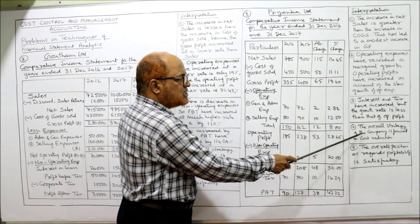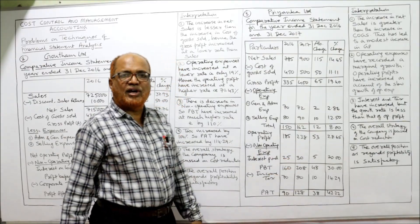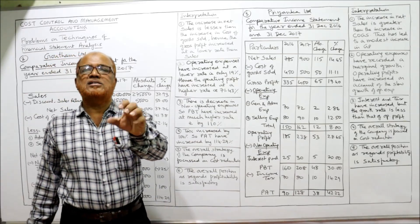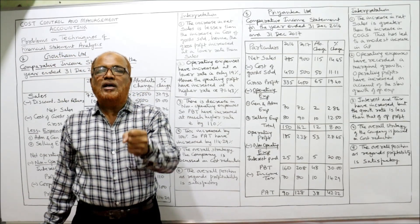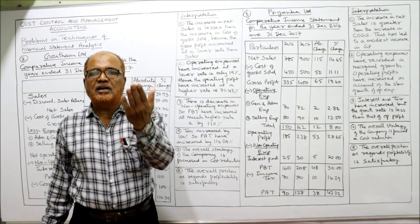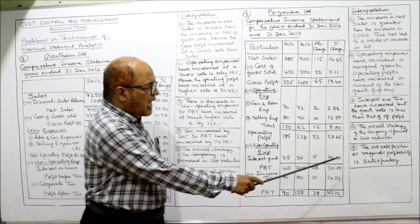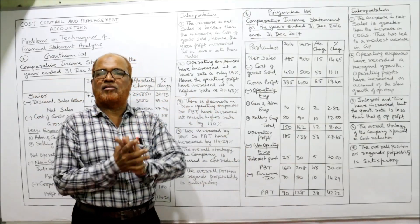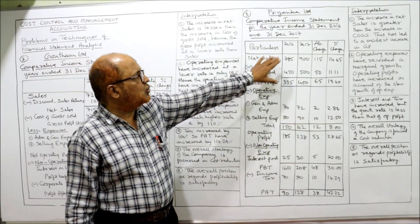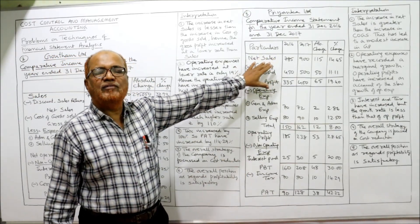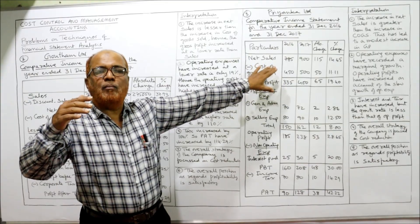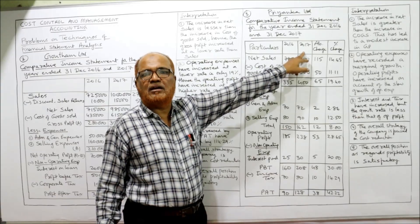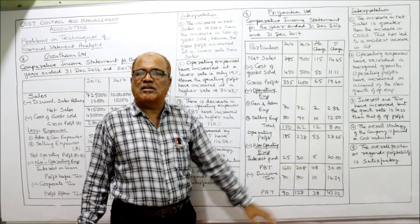The overall strategy of the company is focused on cost reduction. Comparing all the figures, it is clear the company is controlling its costs, which is why profitability is increasing. The overall position as regards profitability is satisfactory. Comparing these two years, there is a modest increase in the profitability of 2017 compared to 2016.